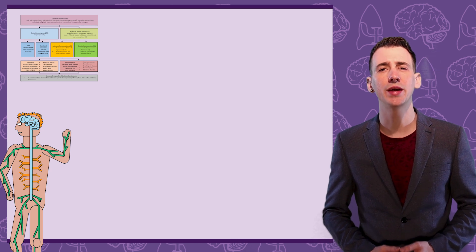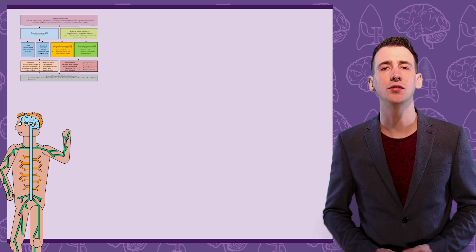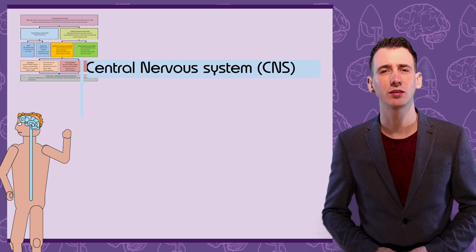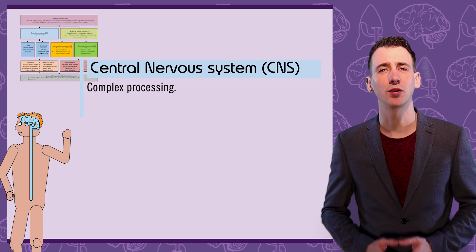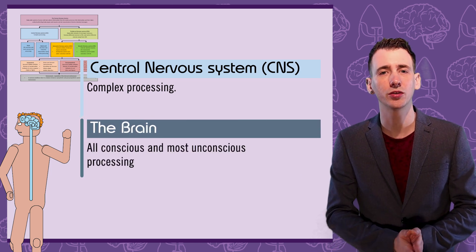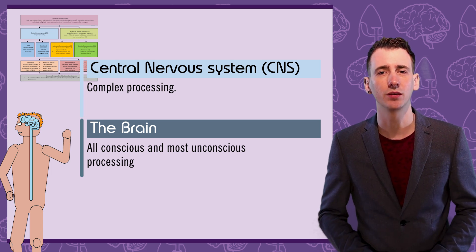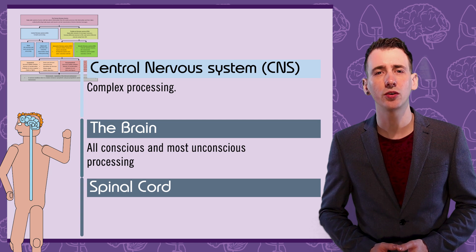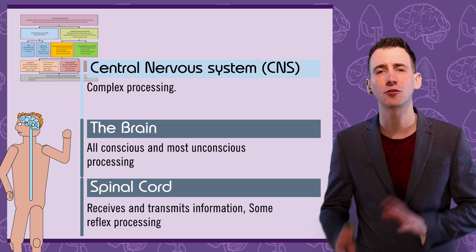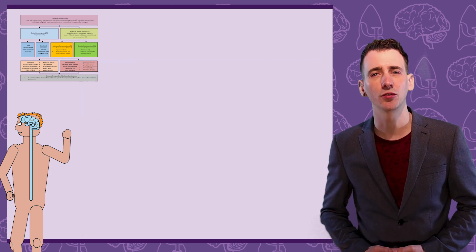The nervous system is broken down into two parts: the central nervous system, or CNS, and the peripheral nervous system, or PNS. The central nervous system provides complex processing and contains the brain, which of course is where your conscious processing takes place, but it's also where much of the unconscious processing happens. The spinal cord is part of the CNS, and this receives and transmits information to and from the brain and body, but it can also perform some basic motor reflexes too.